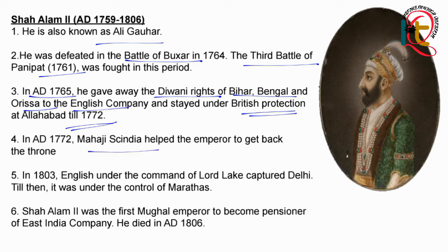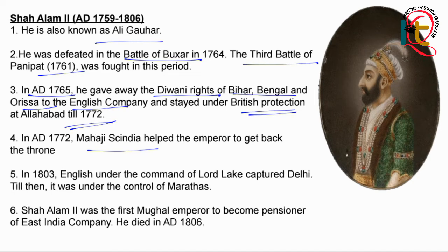In 1772, Mahadji Sindhia helped Emperor Shah Alam by supporting him to return to the throne and assisted in the Diwani matters. The next important point is that in 1803, English commander Lord Lake captured Delhi, which until then had been under the control of the Marathas.